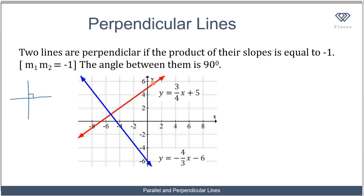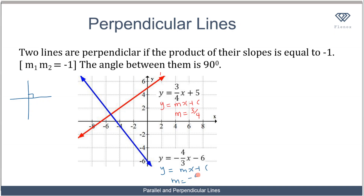Let's try that out. We are given the equation of the red line — let me call that line one — as y = (3/4)x + 5. Comparing with y = mx + c, the slope m1 is equal to 3/4. For the blue line, the equation is y = (-4/3)x - 6. Comparing with y = mx + c, the slope m2 is -4/3.